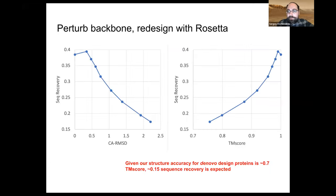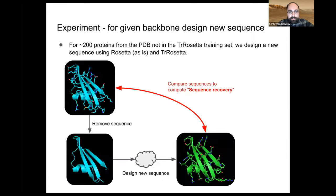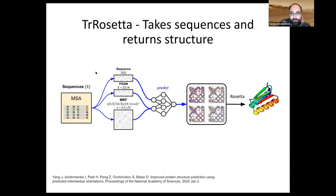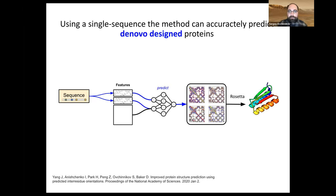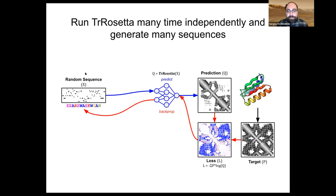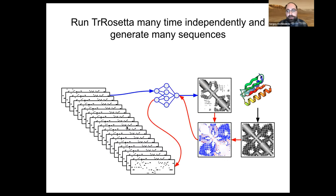Another hypothesis: maybe when TrRosetta looks at the sequence, it's not actually looking at the entire sequence. Perhaps a few key residues determine the fold, and as soon as the model sees those key residues it predicts the structure and has no incentive to look at the rest. To test this, we took one random protein and designed 10,000 sequences for it instead of just one.